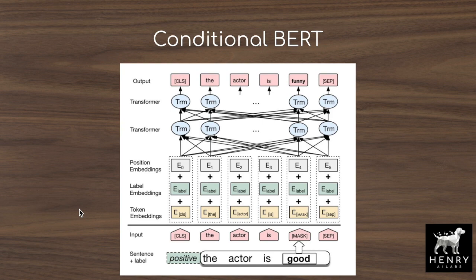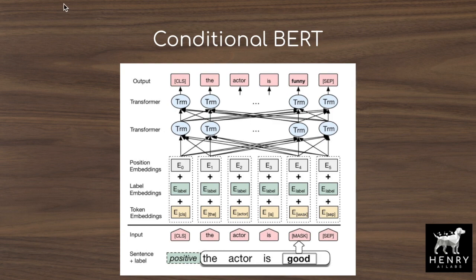The next development in contextual augmentation was conditional BERT, which is conditioned on the label of the sentence before filling in the masked language modeling task. So 'the actor is good' has 'good' masked out, but the conditional BERT model knows that the label is going to be positive. BERT has three embeddings: a token embedding mapping tokens to a dense vector space, a label embedding (replacing the segment embedding used in next sentence prediction), and a position embedding. The positive label is embedded into a dense vector that's added to the sequence embeddings going into BERT, so it preserves the label during contextual augmentation.